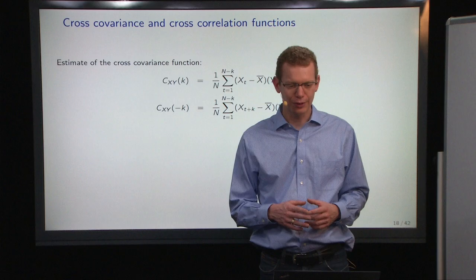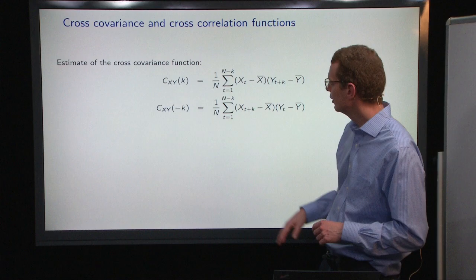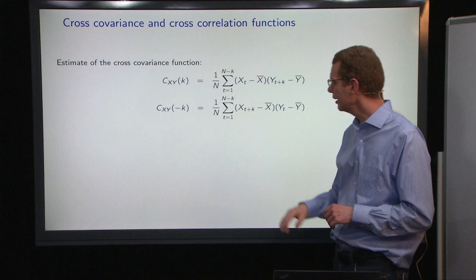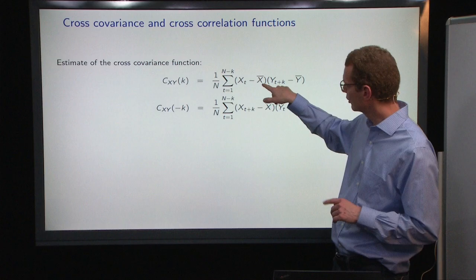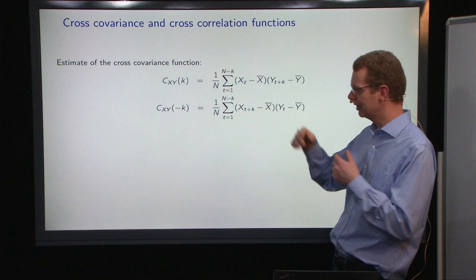So let me get back to the cross-covariance or cross-correlation function. The cross-covariance between x and y at lag k is defined as the sum of all the possible products of x_t minus the mean value of x_t times y_t plus k. So you shift the output k steps forward in time.